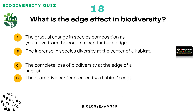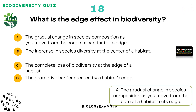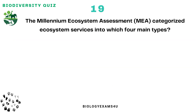Question number 18: What is the edge effect in biodiversity? Option A: The gradual change in species composition as you move from the core of the habitat to its edge. Option B: The increase in species diversity at the center of the habitat. Option C: The complete loss of biodiversity at the edge of a habitat. Option D: The protective barrier created by a habitat's edge. The correct answer is: the gradual change in species composition as you move from the core of a habitat to its edge.